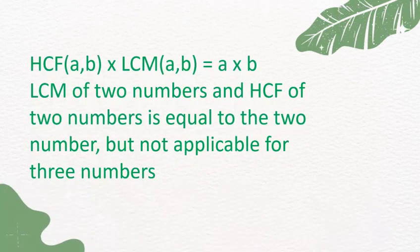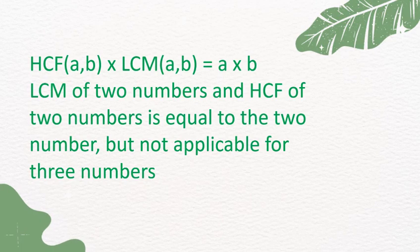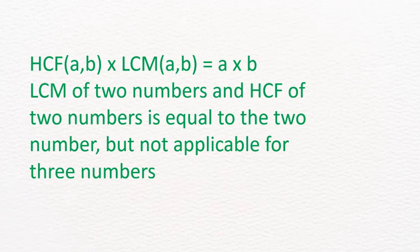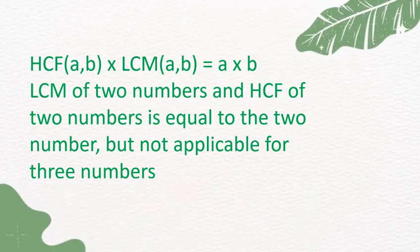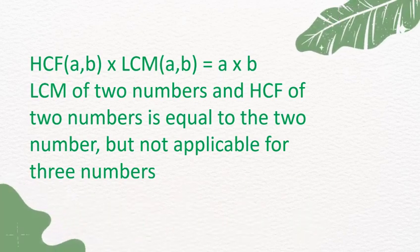Very important formula: HCF(A, B) × LCM(A, B) = A × B. That means the product of the LCM and HCF of two numbers equals the product of those two numbers, but this is not applicable for three numbers.